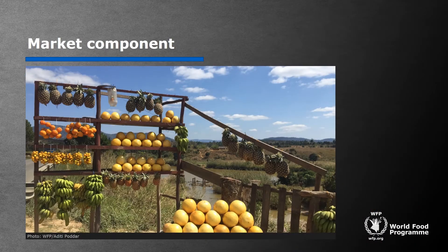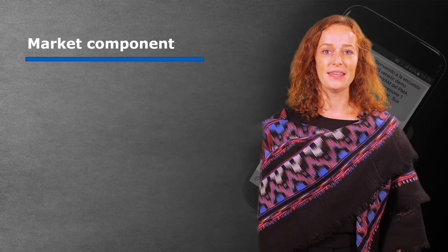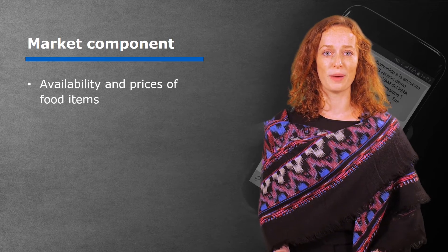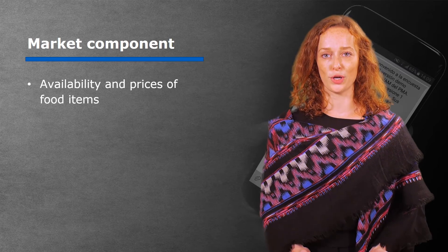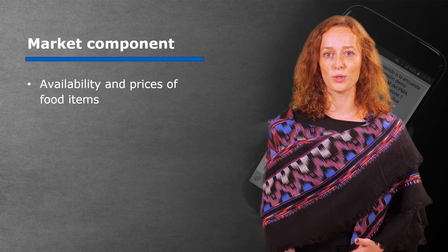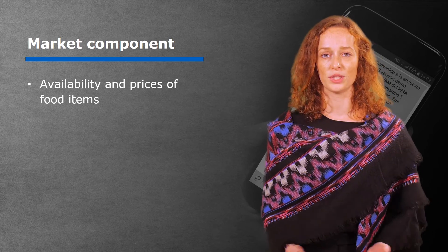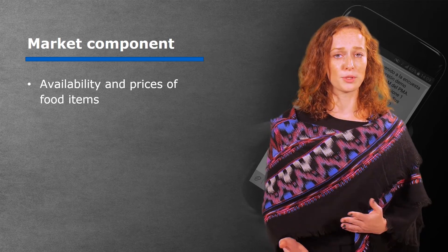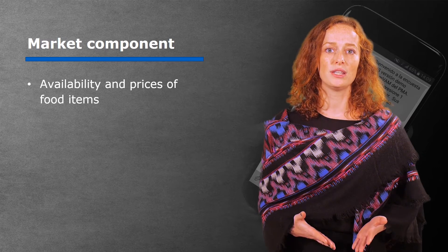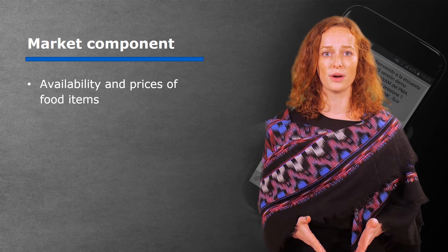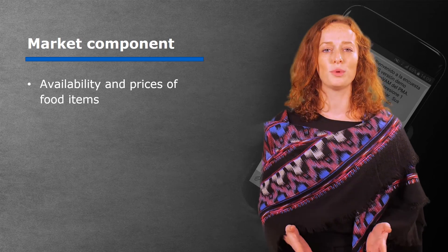There are a number of standard questions included in the market component of the questionnaire. The availability and prices of food items that make up a minimum or standard food basket in the area being monitored. These could be rice, pulses, vegetables, milk, oil, just to name a few. Sometimes the units of measurement, for example, kilograms, cups, or liters, have to be adjusted to use local units of measurement, as these are the units that respondents are used to and able to report on accurately.